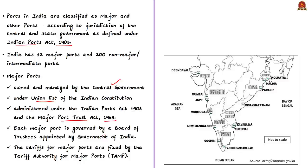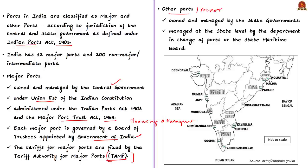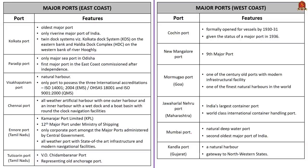Each major port is governed by a board of trustees appointed by the Government of India. Their functions include planning, management, and operations of ports. Tariffs for major ports are fixed by the Tariff Authority for Major Ports (TAMP). Other ports are managed at state level by the department in charge of ports or the State Maritime Board. India has 12 major ports and about 200 non-major or other ports. Among the 12 major ports, 6 are on the east coast and 6 on the west coast.